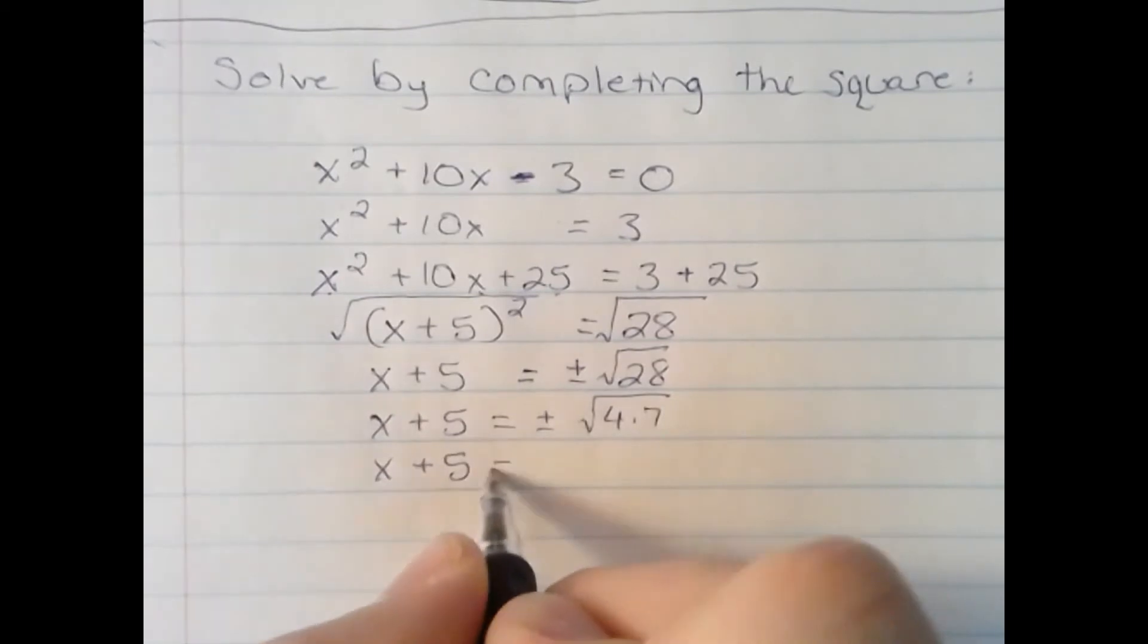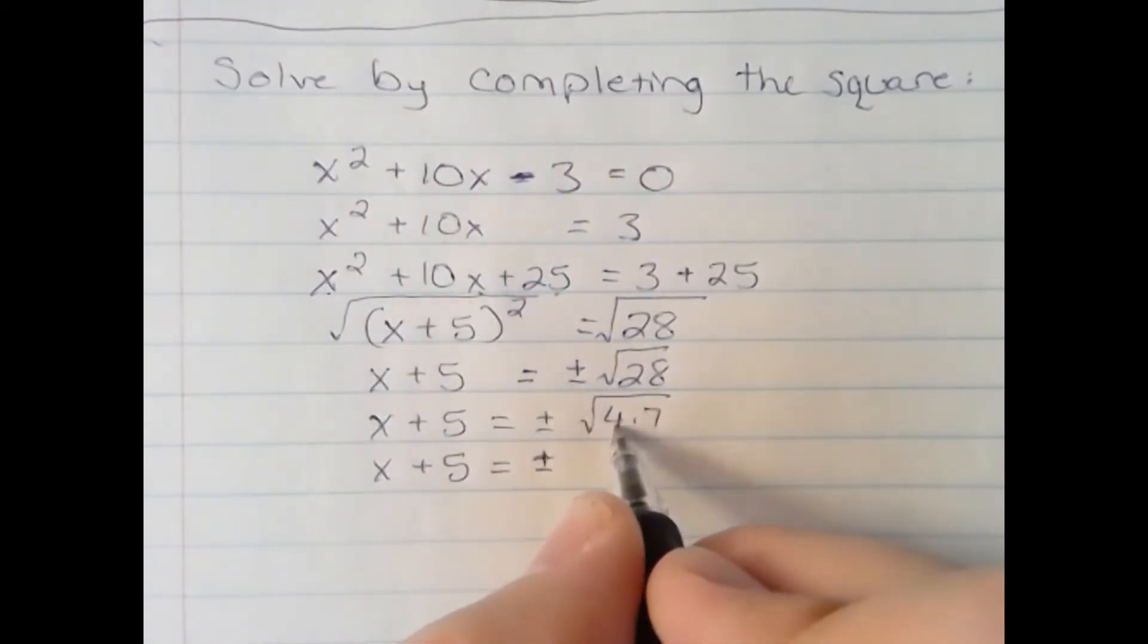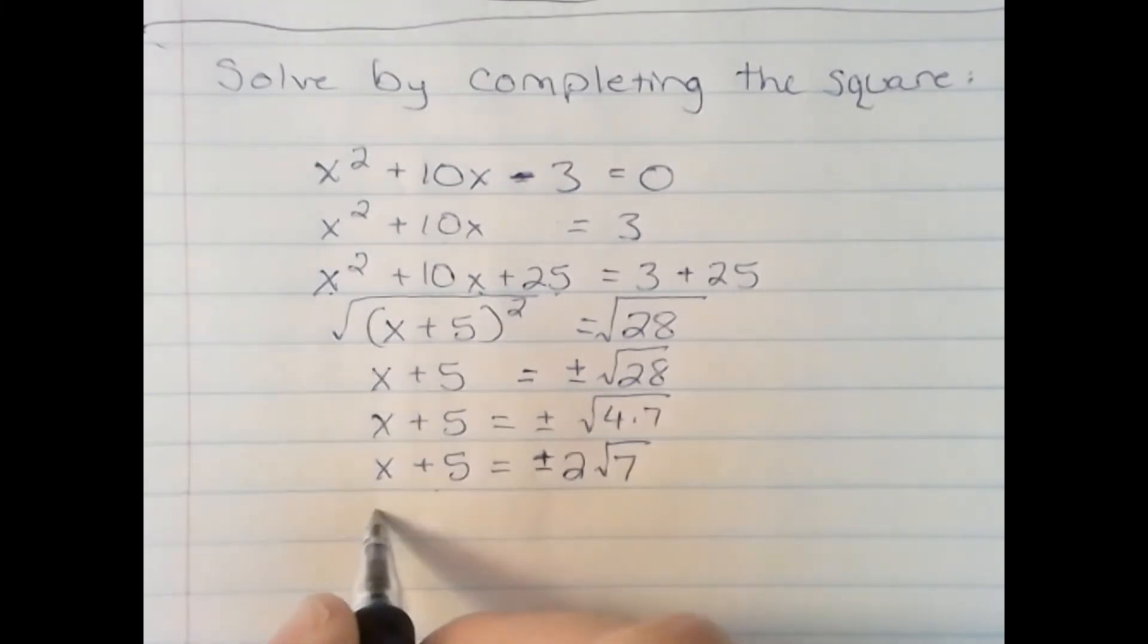So, once again, I write x plus 5 equals plus or minus. I can take the square root of 4, but not 7. The square root of 4 is 2. Now, all I need to do is isolate x by subtracting 5 from both sides.